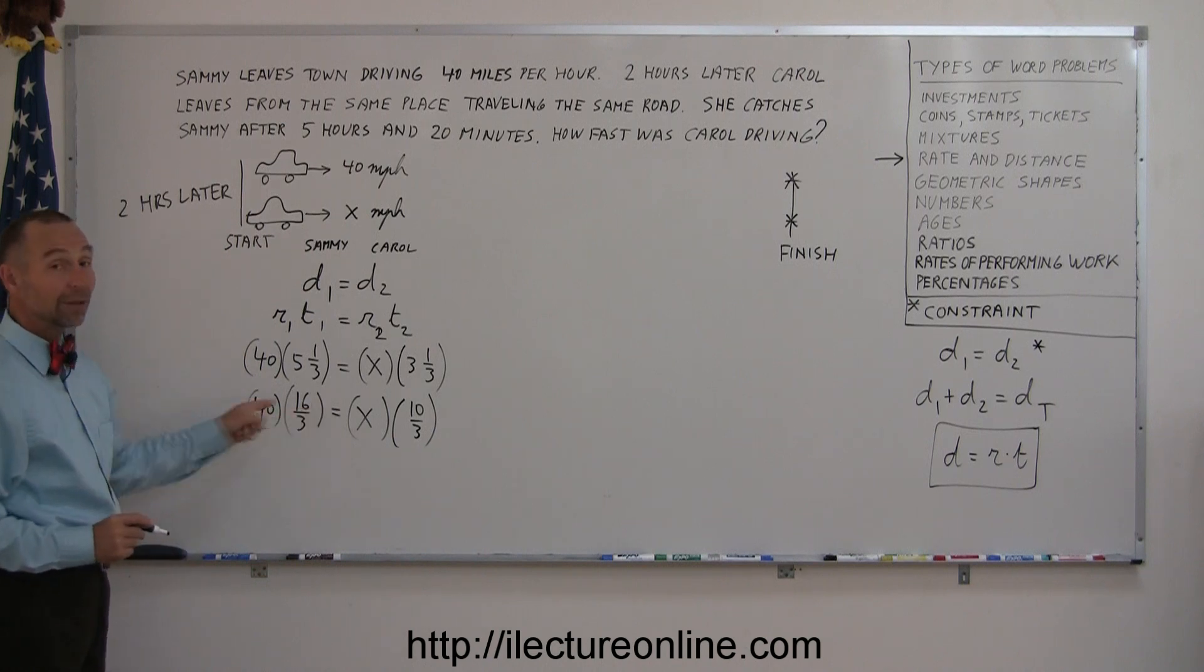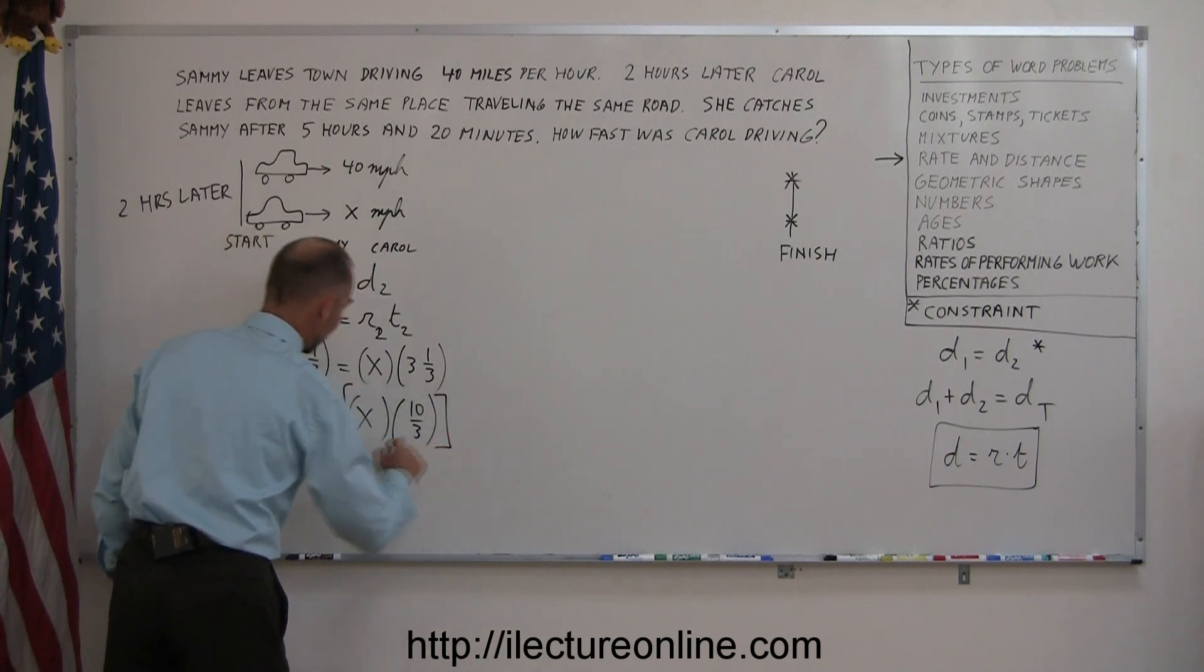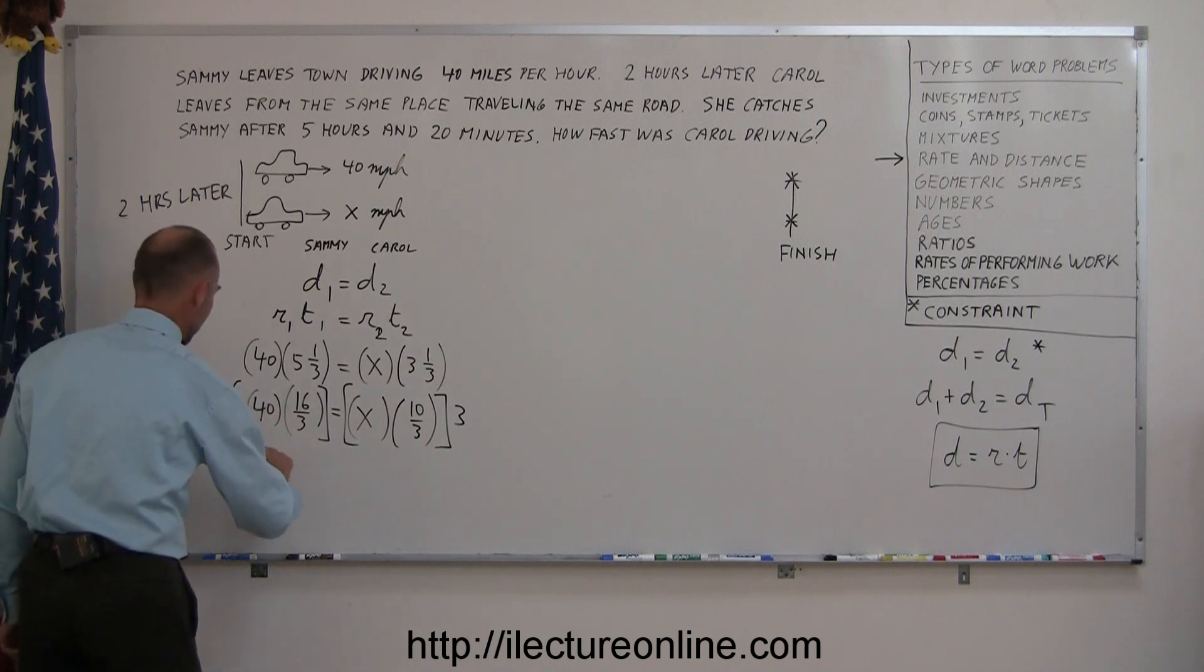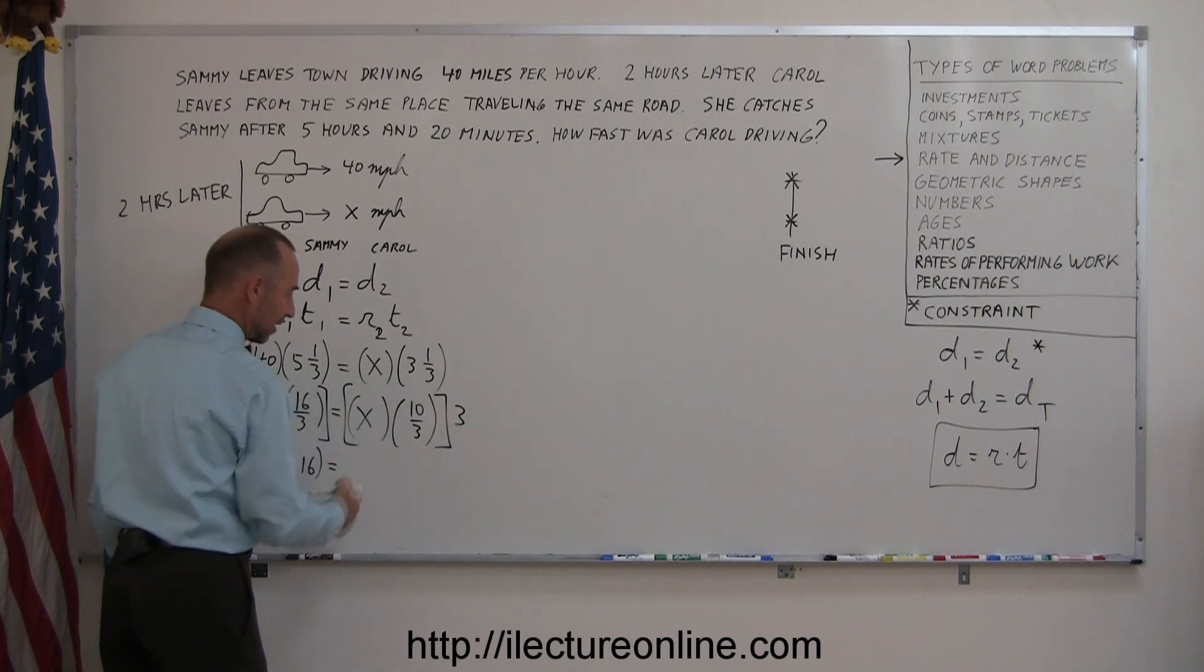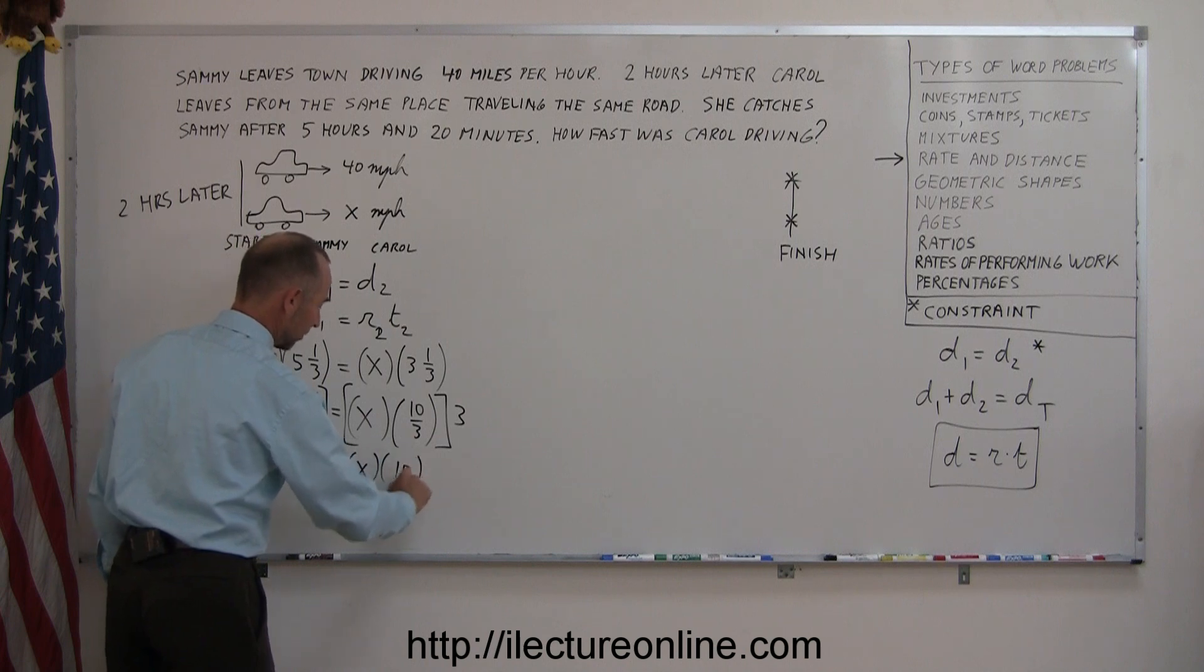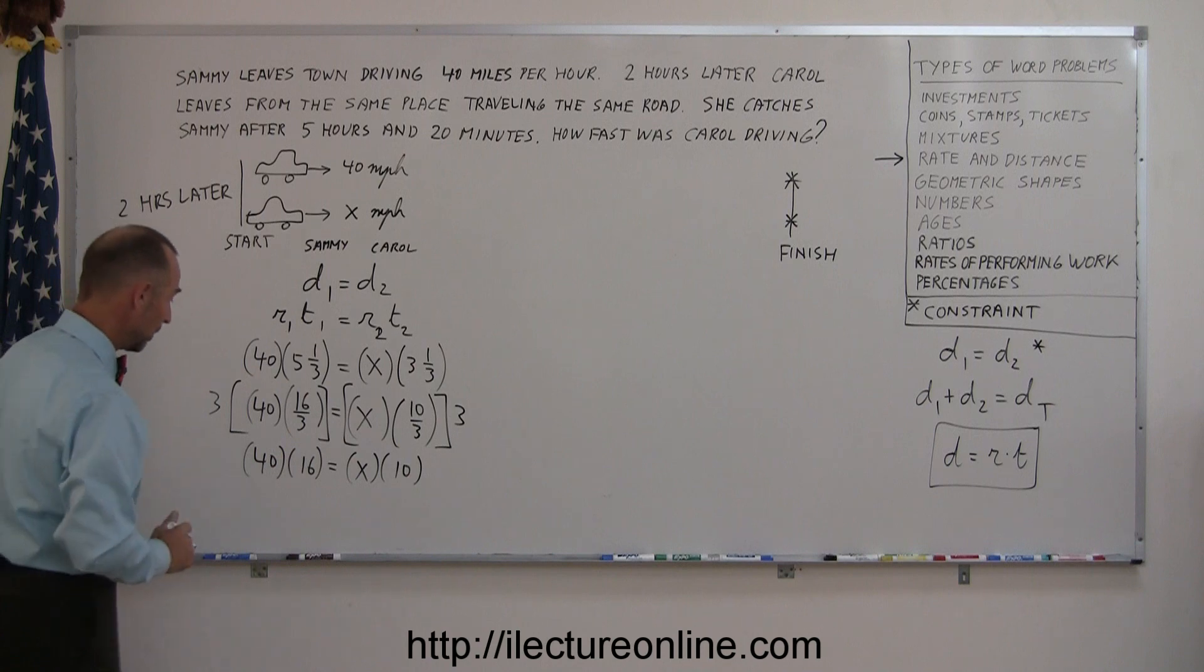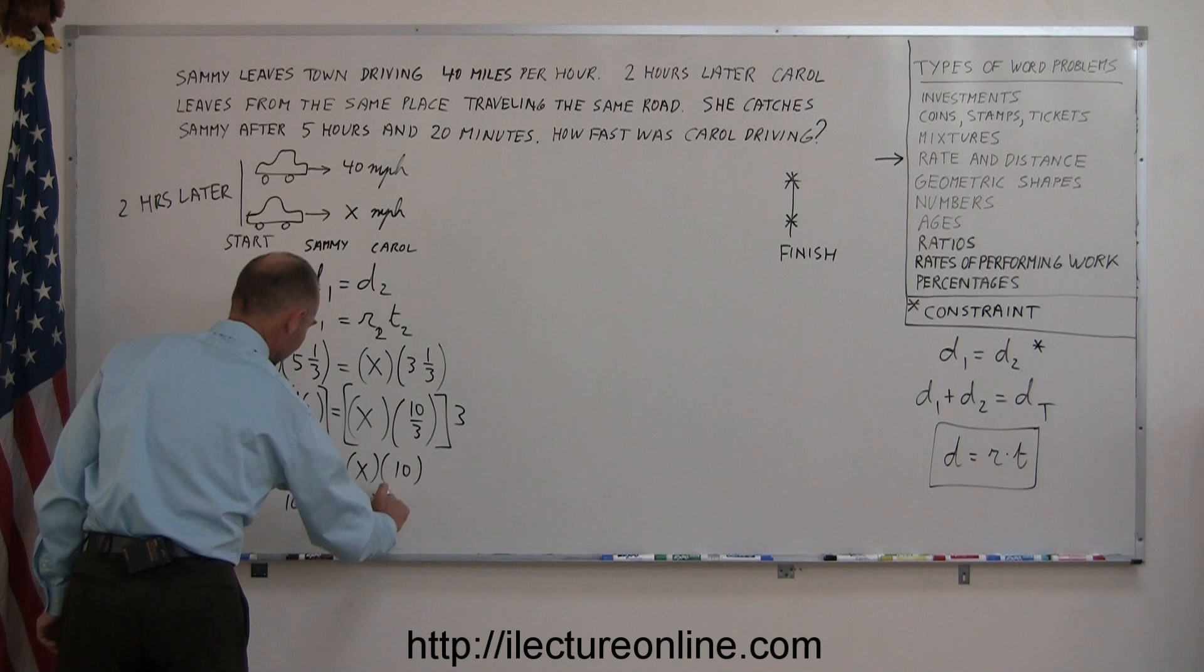Now, I can go ahead and get rid of the fractions by multiplying both sides by the lowest common denominator. In this case, that is 3, so multiply the left side by 3 and the right side by 3. So 3 times 16 thirds, the 3's cancel out and I end with 40 times 16 equals. And 3 times 10 thirds, the 3's cancel out here, I get x times 10. Of course, that's the same as 10x.